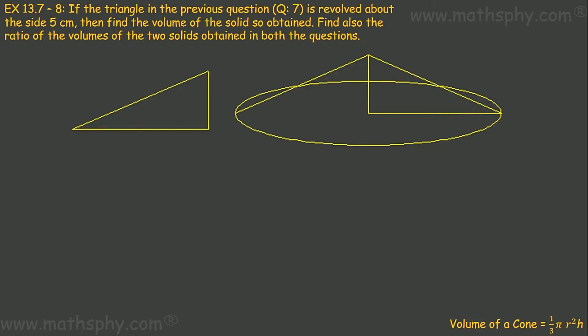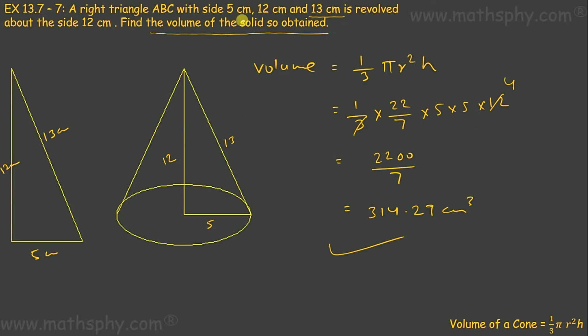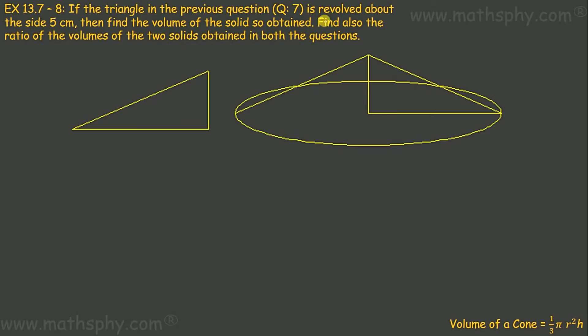This question says if the triangle in the previous question is revolved about the side 5 centimeters. In the previous question we had this triangle where hypotenuse was 13, base was 5, and height was 12. I have flipped this.